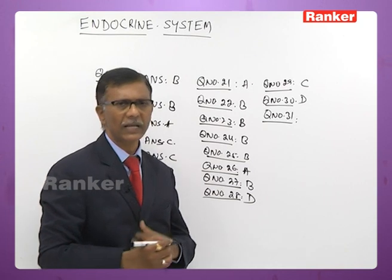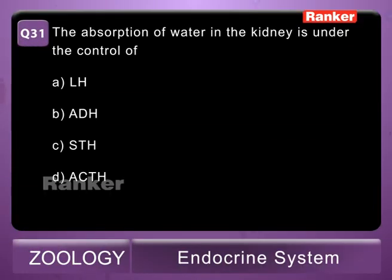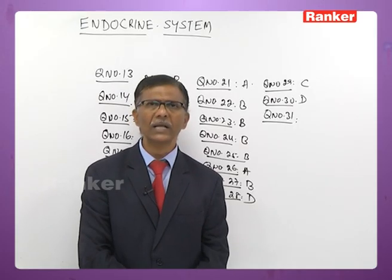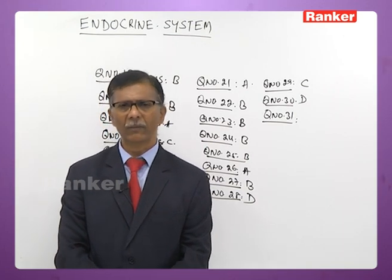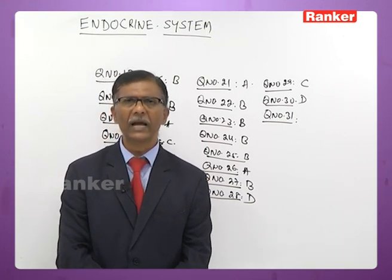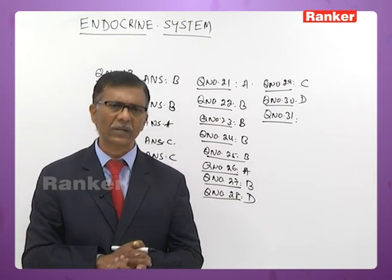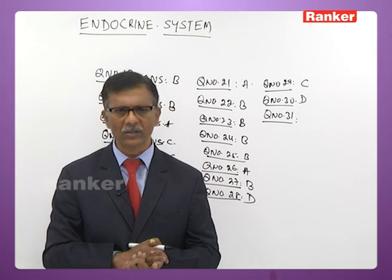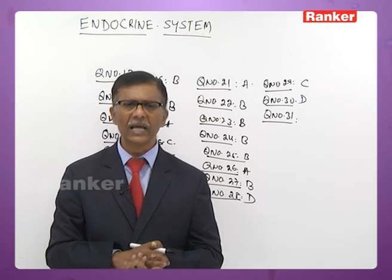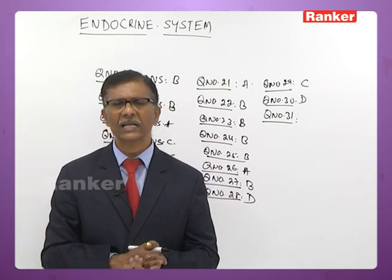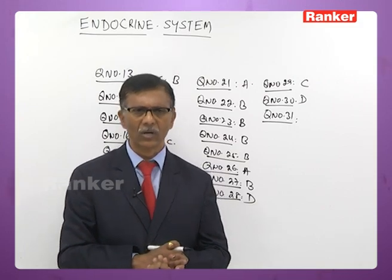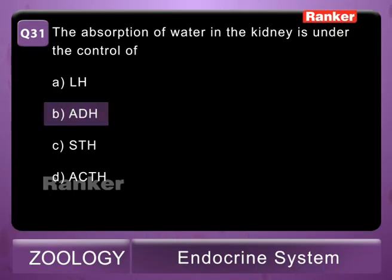Thirty-first question: the absorption of water in the kidney is under the control of A - LH, B - ADH, C - STH, D - ACTH. LH is concerned with the reproductive system. ADH (antidiuretic hormone), also called vasopressin, is concerned with water absorption by the nephrons. STH is growth hormone (somatotrophic hormone). ACTH stimulates the adrenal cortex. The correct answer is B — ADH.